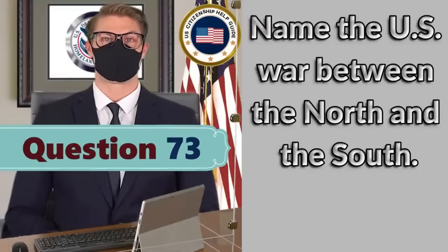Who was the first president? George Washington. What happened at the Constitutional Convention? The Constitution was written. Under our Constitution, some powers belong to the states. What is one power of the states? Provide schooling and education.